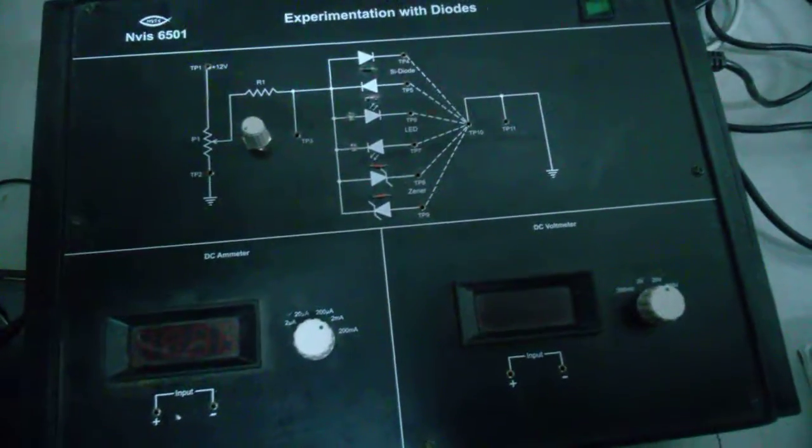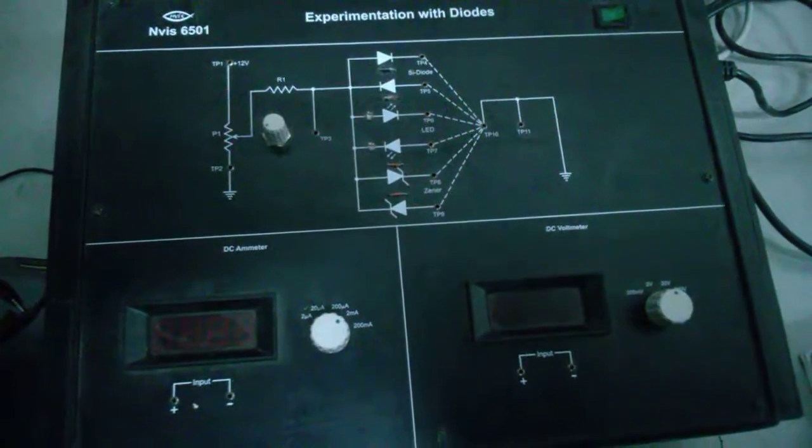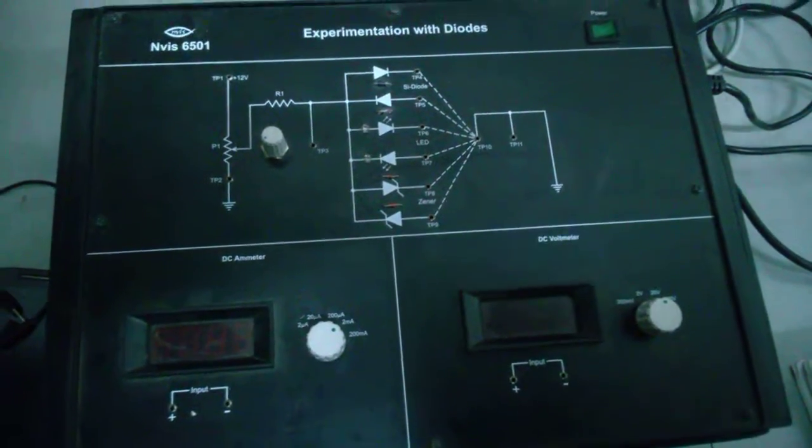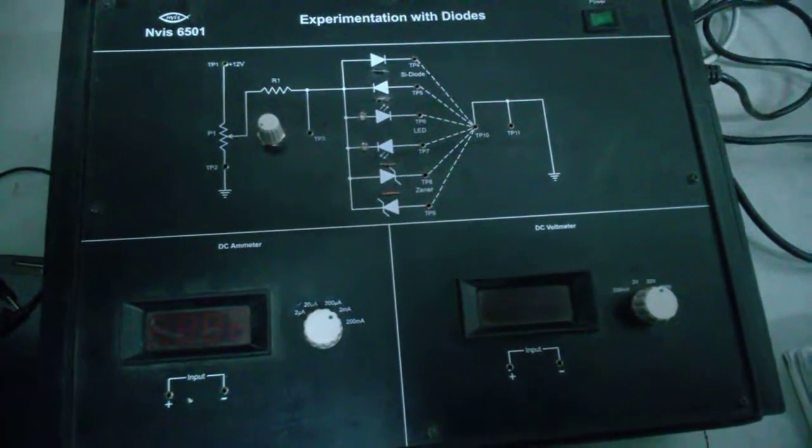Hello everybody, so this is experiment number 2 and 3 in which we are going to study the voltage and current characteristics of the PN junction diode and Zener diode.